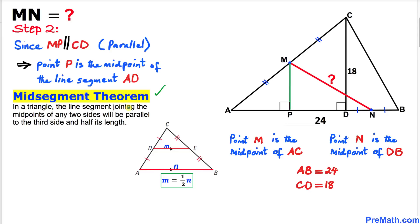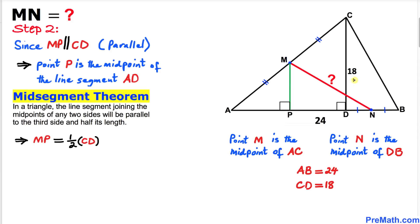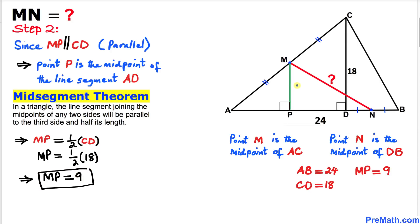Let's recall the mid-segment theorem: in a triangle, the line segment joining the midpoints of any two sides will be parallel to the third side and half its length. Applying this to our problem, line segment MP is half of line segment CD. Since CD is 18, MP equals one half times 18, so MP turns out to be 9 units.